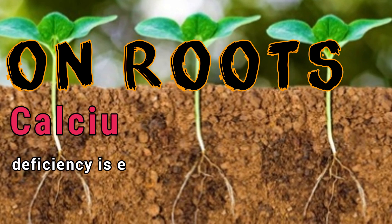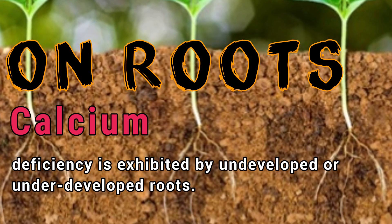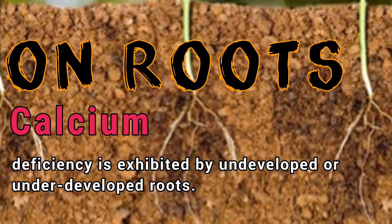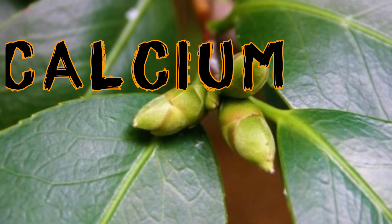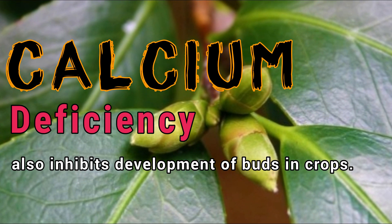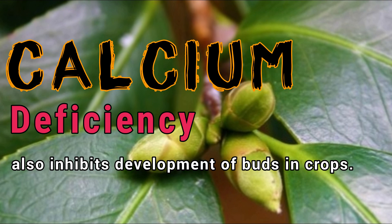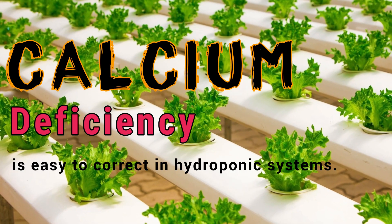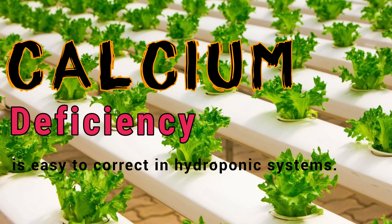On roots, calcium deficiency is exhibited by undeveloped or underdeveloped roots. Calcium deficiency also inhibits development of buds in crops.